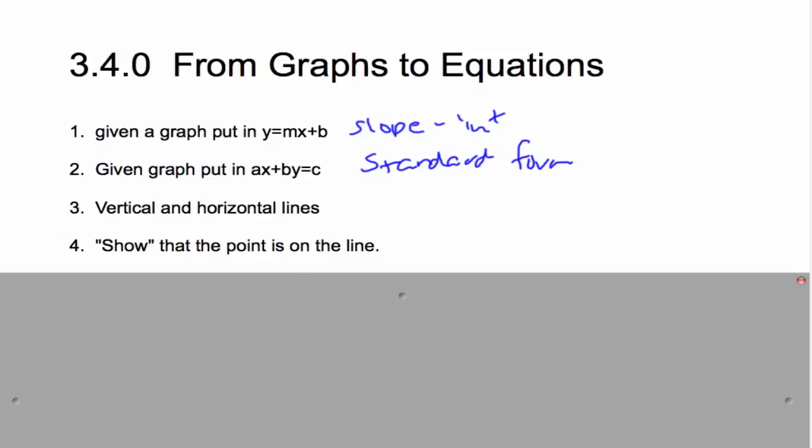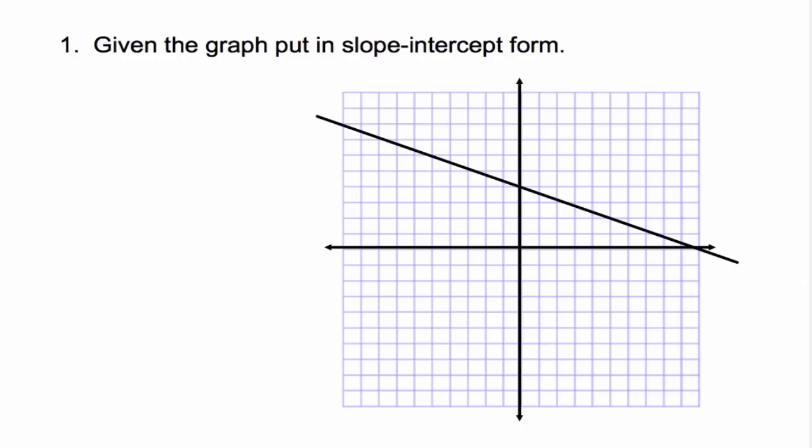Here's the first example. Given the graph, put it in slope-intercept form. We want it to look like y equals mx plus b. So, we need m and we need b. I would start with the b actually, it's probably the easiest one. We can just see the y-intercept right there is 4 up. So, b is 4, the y-intercept.